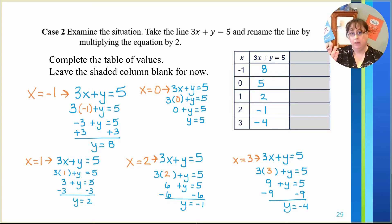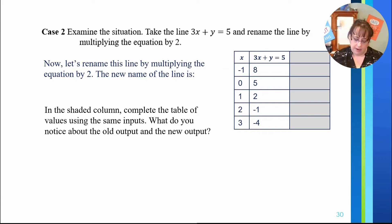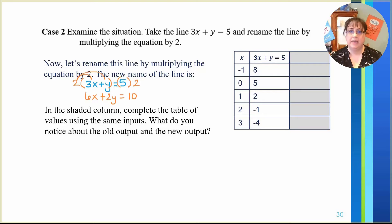Now we have all of the values — for those x inputs we know what y is equal to, giving us those ordered pairs on the graph. Now we're going to rename this line by multiplying it by 2. So long as we multiply and do the same thing to both sides of the equation, we have an equivalent equation. Let's take 3x plus y equals 5 and multiply both sides by 2: 3 times 2 gives us 6x, 2 times y is 2y, and 5 times 2 is 10. So we have the new equivalent equation 6x plus 2y equals 10.